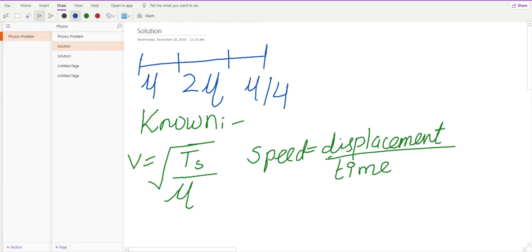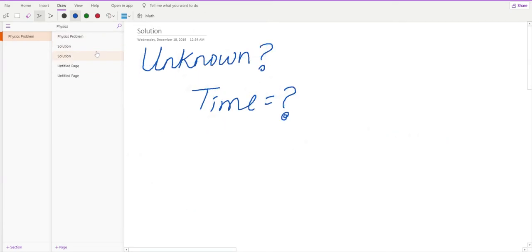I know that the speed of a wave is defined as the square root of tension of string divided by mu, and the speed is equal to displacement over time. I know that my unknown is the time because I'm trying to find the total time it takes for the wave to go from one segment to the other.